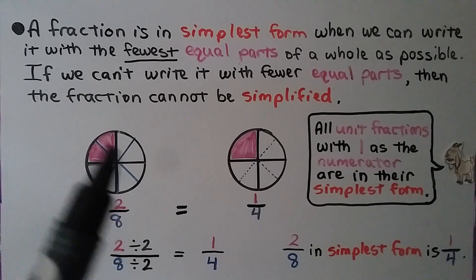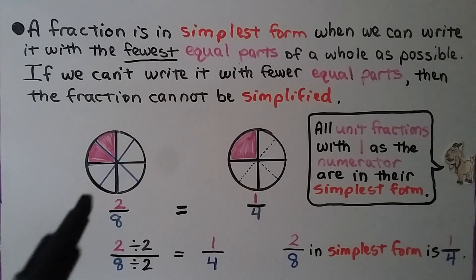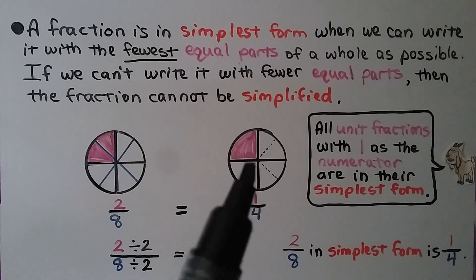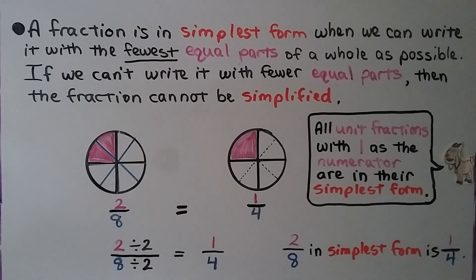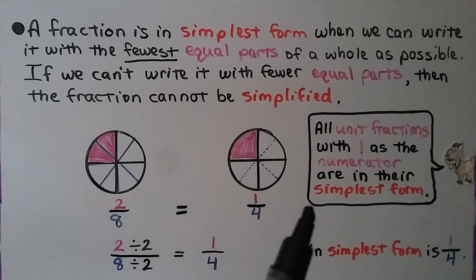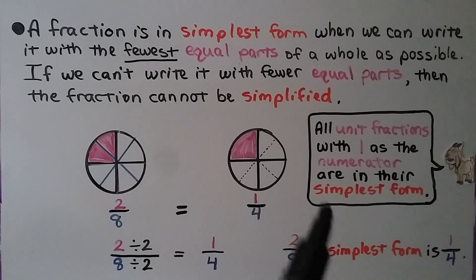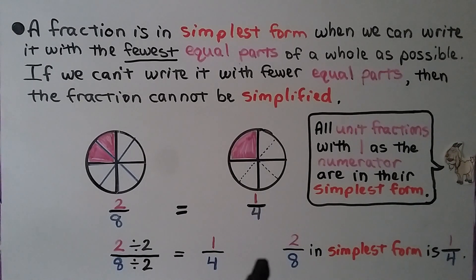Here we have a circle split into eight equal parts, and two of the eight parts are shaded — that's two-eighths. We have another circle split into four parts, with dotted lines showing where the eighths would have been, and one of the four parts is shaded. Two-eighths is equal to one-fourth. The numerator is one, making it a unit fraction. All unit fractions with one as a numerator are in their simplest form. Two divided by two is one, and eight divided by two is four — so two-eighths in simplest form is one-fourth.